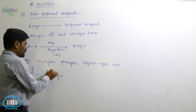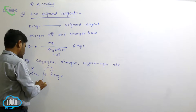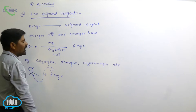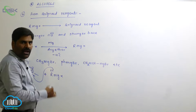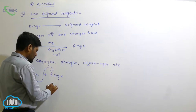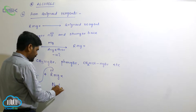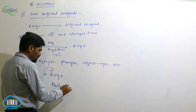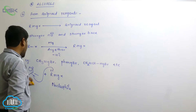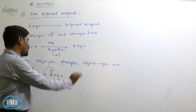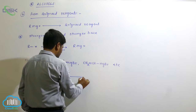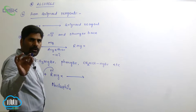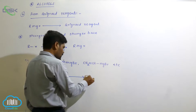Because magnesium is a metal and carbon is a non-metal, carbon carries a negative charge and magnesium carries a positive charge. Therefore, the Grignard reagent acts as a nucleophile, and this addition is known as nucleophilic addition.